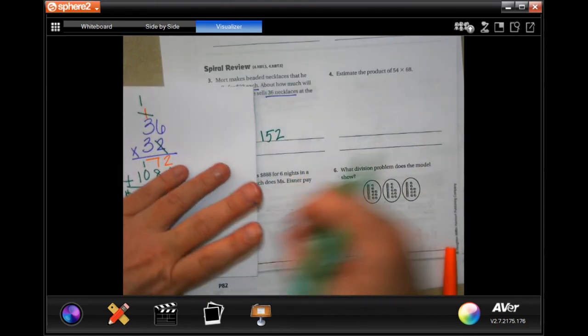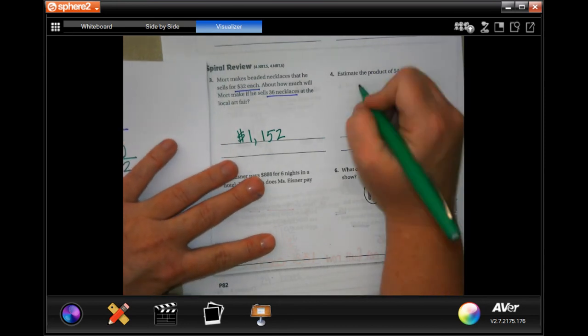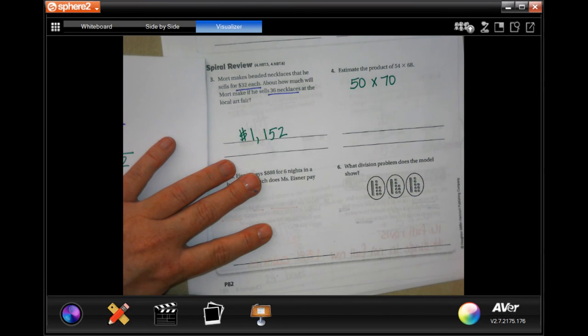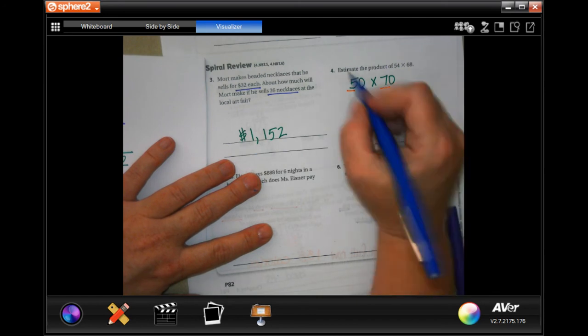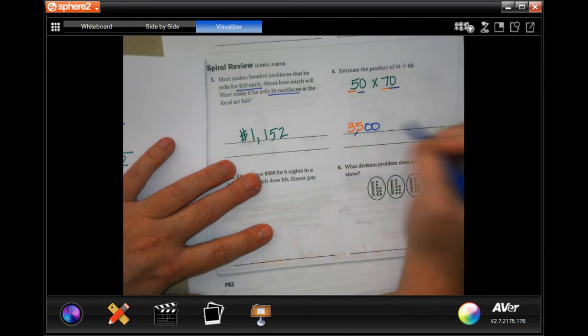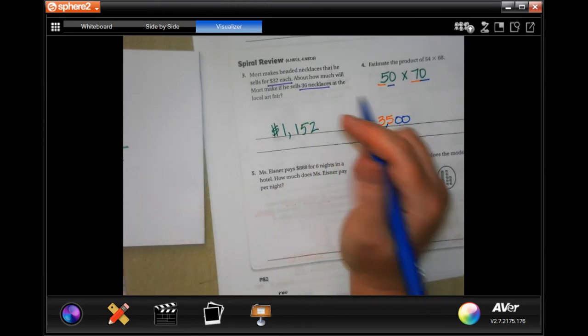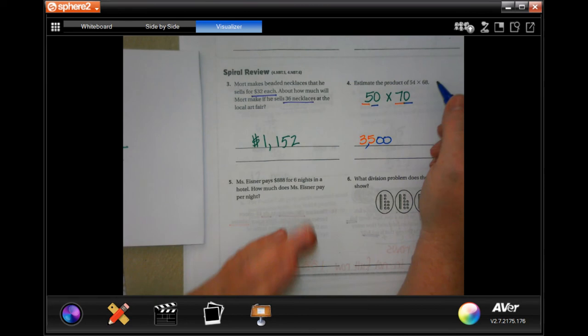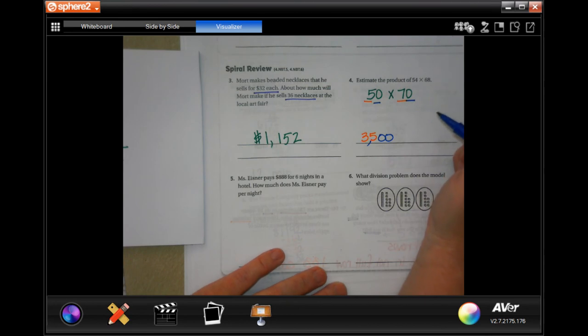Write your work down, guys. Estimate the product of 54 times 68. Well, I'm going to make that 50 times 70 because 54 would round to 50 and 68 would round to 70. I know that 5 times 7 is 35. And then I have 1, 2 zeros, 1, 2 zeros. 3,500. Remember, anything reasonable. So if you want to do 55 and 70, if you want to do 55 and 65, you could probably do that. But the easiest one that I know of, 50 and 70.